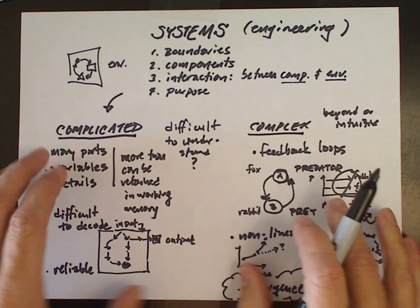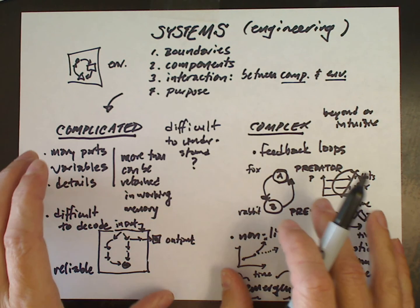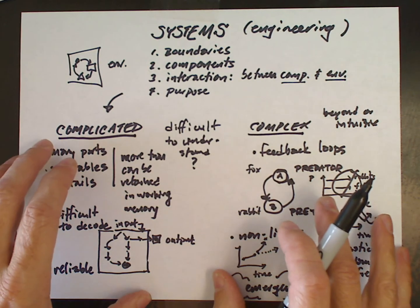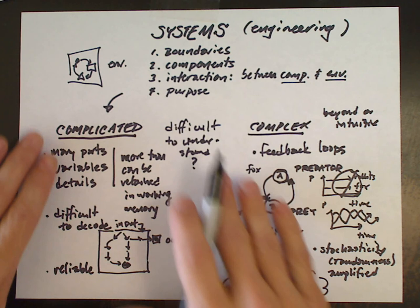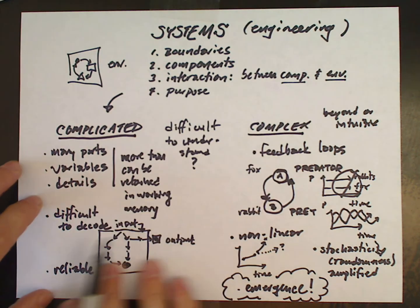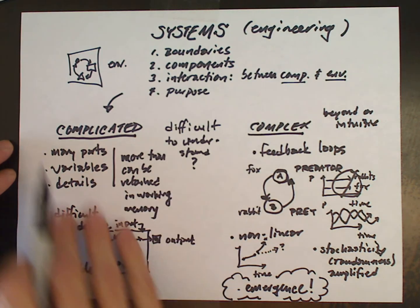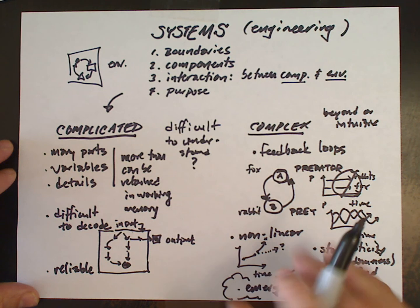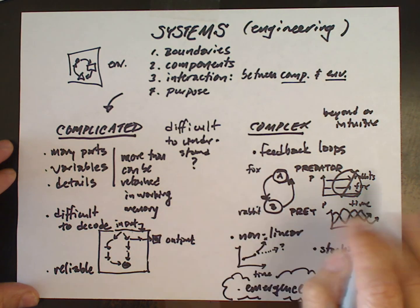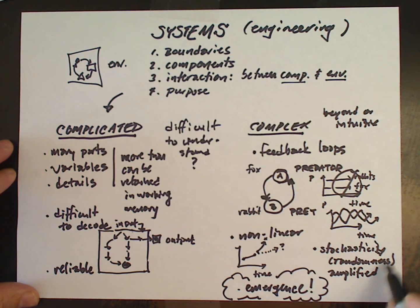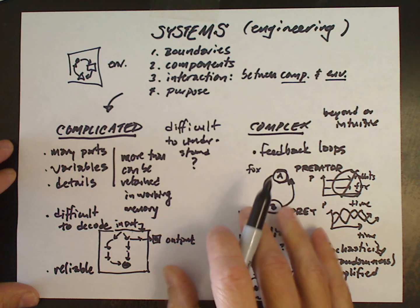This distinction helps us know how to model the system. When we model the system, we create an oversimplified representation of the system, and it helps us pay attention to some things and ignore others. When we have the view that the system is complicated, we tend to create representations that are in accord with our hypothesis, or our pre-analytic vision of the system as complicated. When we perceive the system as complex, then we will look for, we will pay attention to, rather than abstract away, we will pay attention to the feedback loops, we'll pay attention to the non-linearities, we'll pay attention to those important sources of stochasticity, and we will look for the emergent phenomena in the complex system.